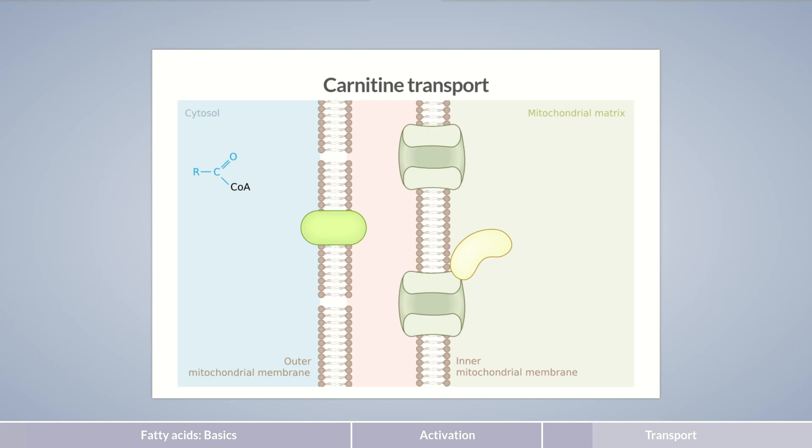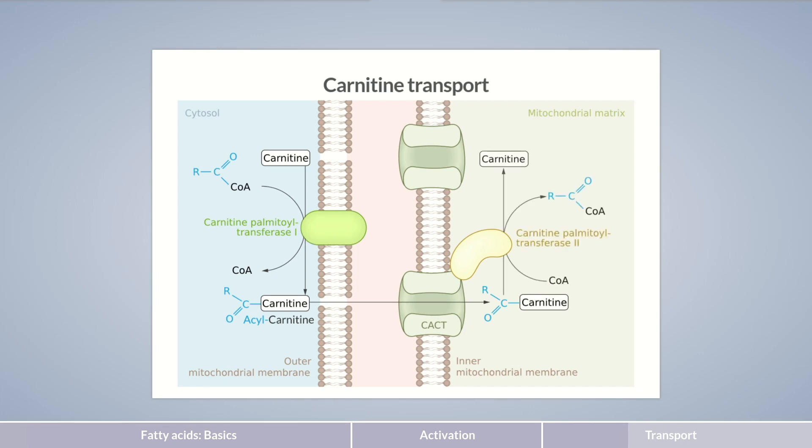In preparation for transport, the coenzyme A is exchanged for carnitine by a carnitine-palmitoyl transferase, while the molecule is still located in the cytosol. The formed acyl-carnitine enters the intermembrane space and is subsequently shuttled across the inner membrane into the matrix by a carnitine-acyl-carnitine translocase. Inside the matrix, carnitine is exchanged for coenzyme A again, regaining acyl-CoA. While carnitine is transported back into the cytosol, the acyl-CoA can now enter the beta-oxidation cycle.